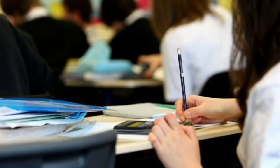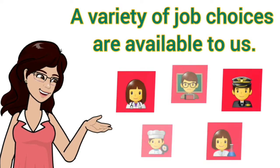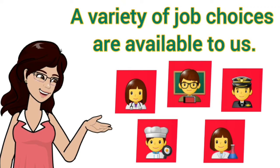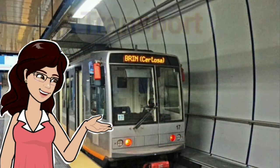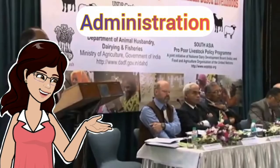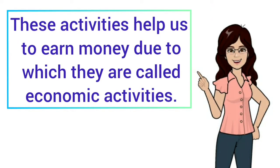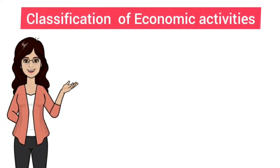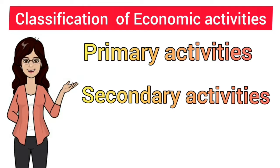Hello everyone, hope you are doing good. A variety of job choices are available to us, for example agriculture, manufacturing, trade, transport, medical, engineering, administration, etc. These activities help us to earn money, due to which they are called economic activities. Economic activities can be broadly classified into three main categories: primary activities, secondary activities, and tertiary activities.